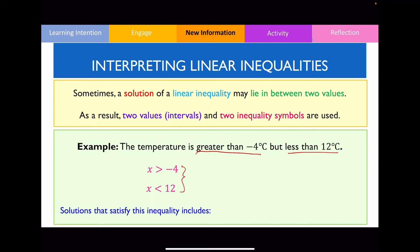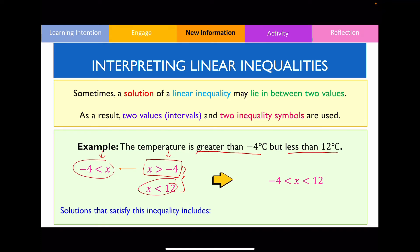To write it as one inequality, we take the smaller inequality and flip the entire equation — whatever's on the left side becomes on the right side, and the inequality sign direction is also flipped. So x > -4 becomes -4 < x. That means -4 < x < 12, representing that the temperature is in between negative 4 and 12. Solutions that satisfy this are negative 3, negative 2, negative 1, all the way up to 11 degrees Celsius.